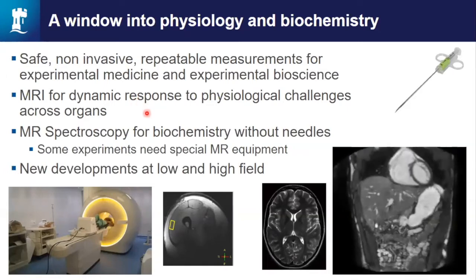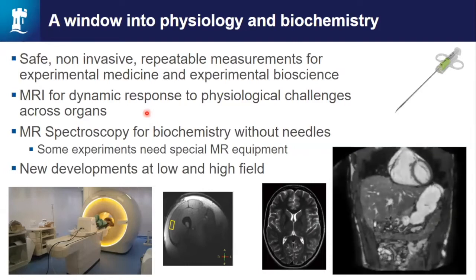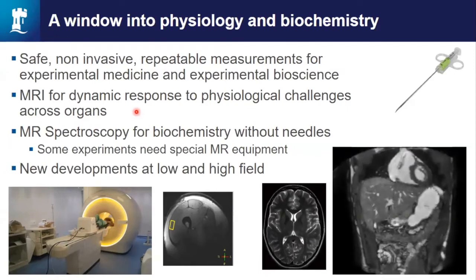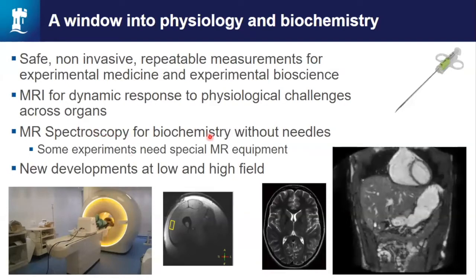We use MRI to study dynamic responses to physiological challenges across organs. These challenges can include exercise or diet. We can do MR spectroscopy — biochemistry without the needles — looking at what's going on within the tissues. What I'm going to focus on today is developments at very low and very high field.